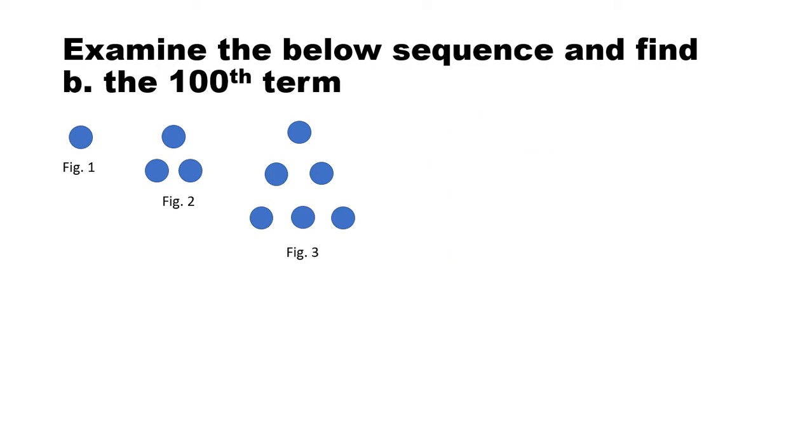This is the same question, same sequence, but they're asking us to find the 100th term. Now we already know that one plus two plus three goes on up to 99 plus 100. So the formula is 100 times 101 divided by 2. So in this case, 2 times 50 gives 100, and the answer is 5050. So that is the number of circles in the 100th term.